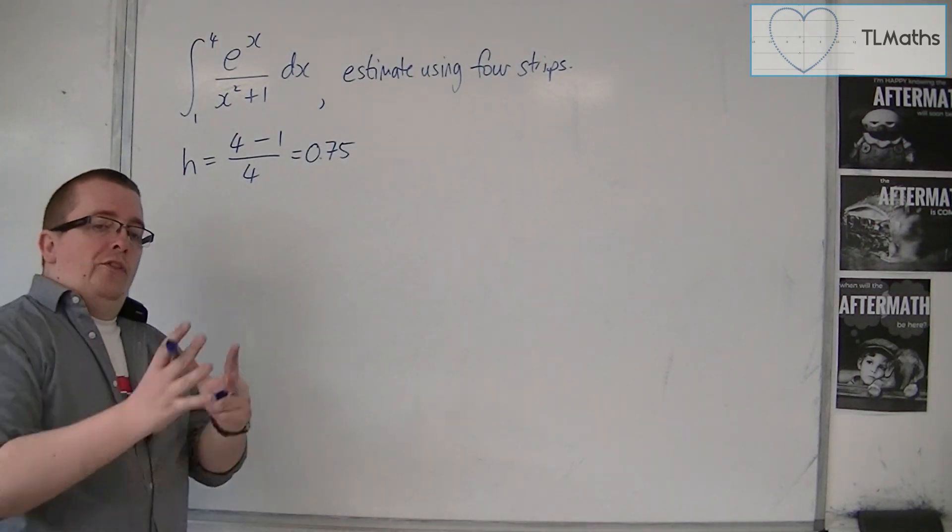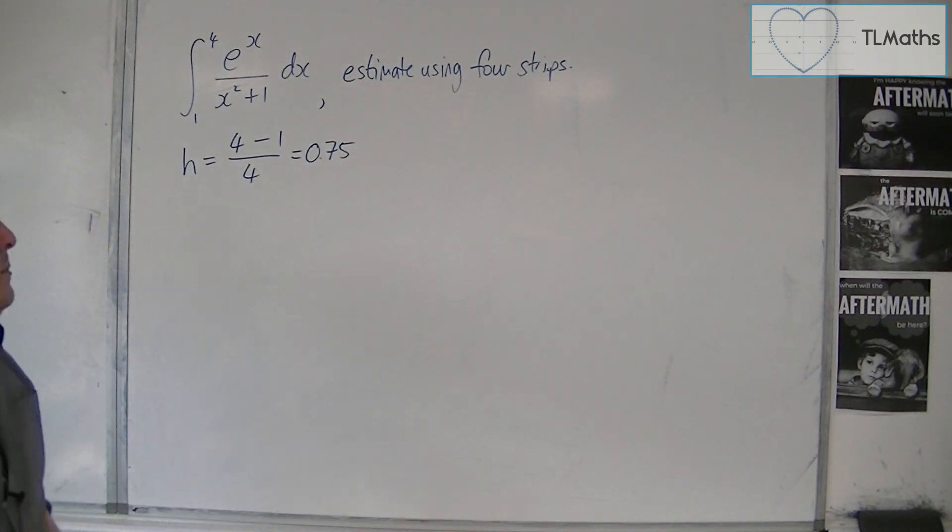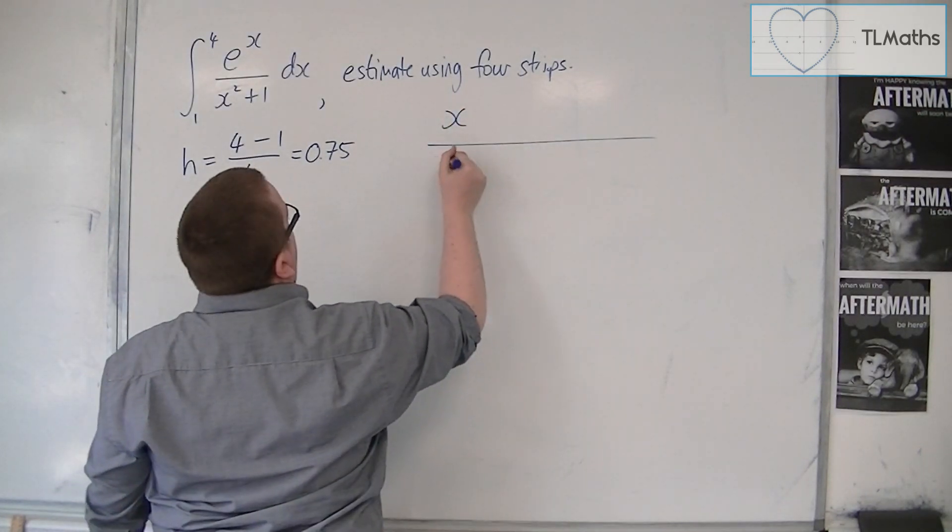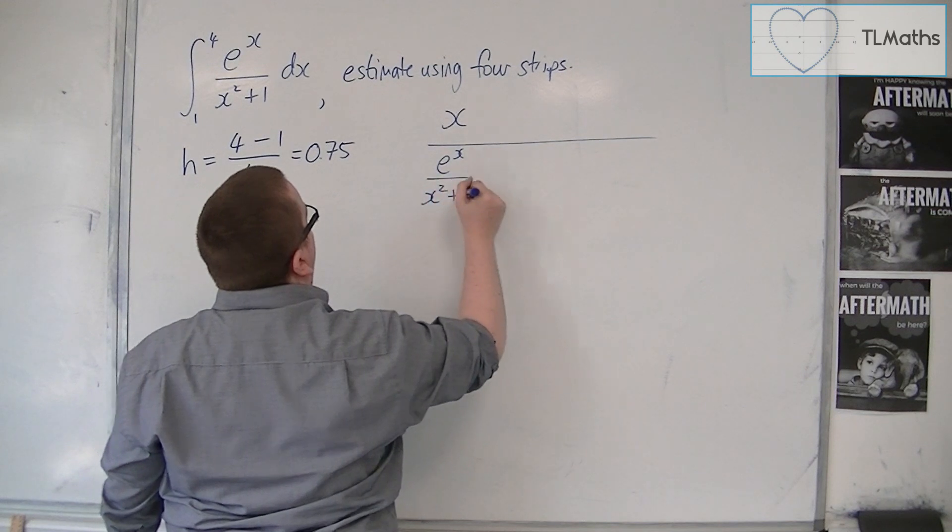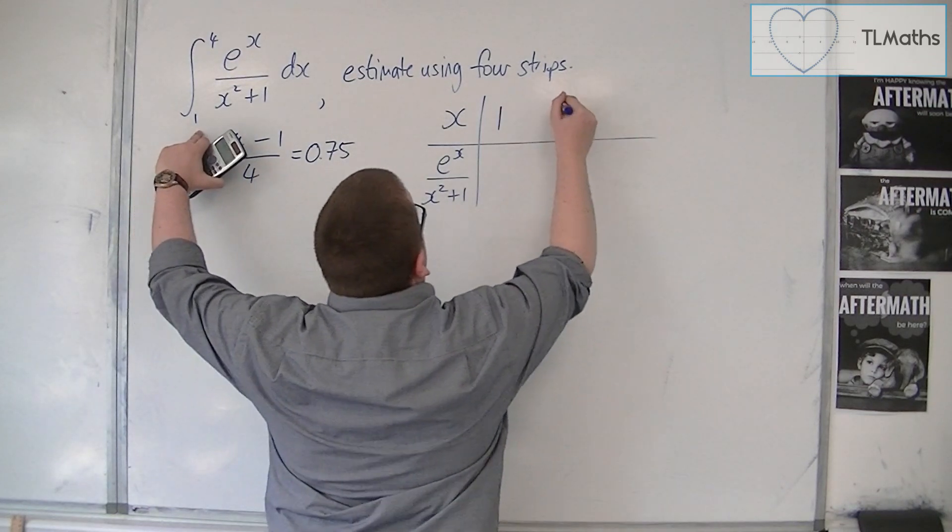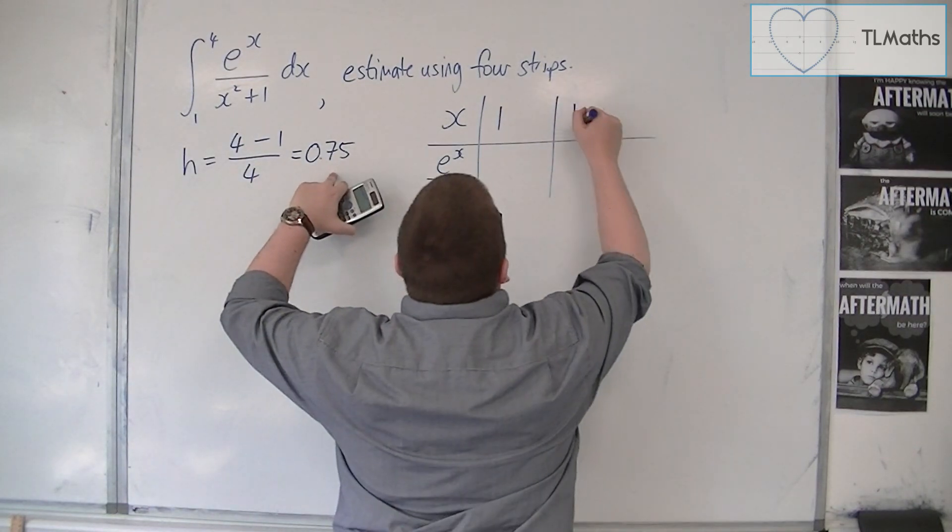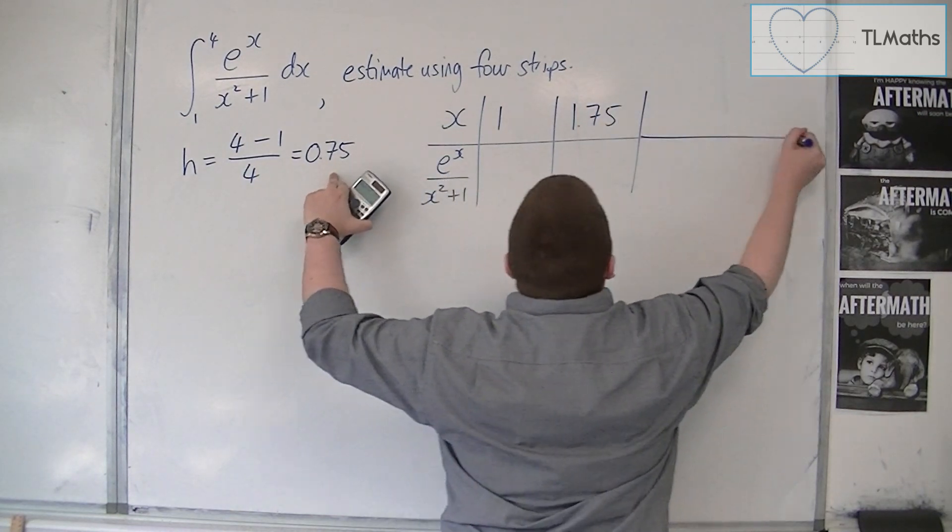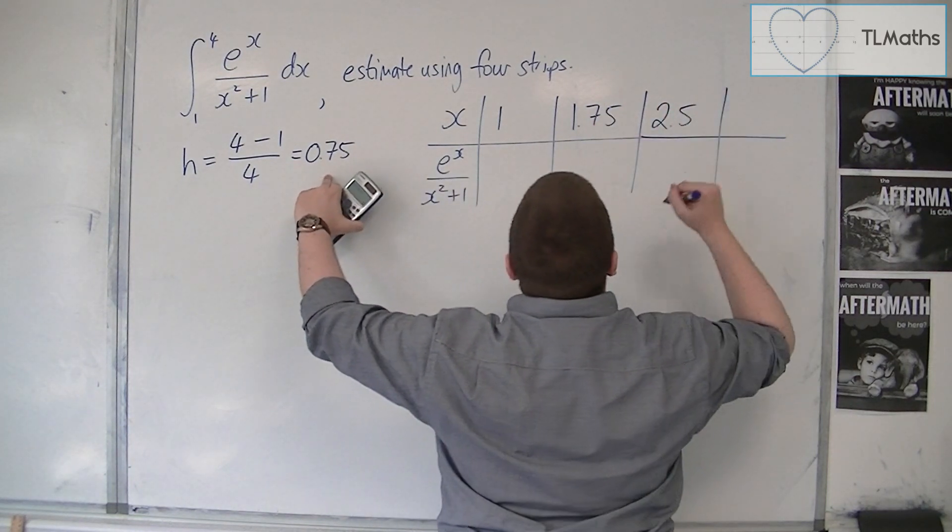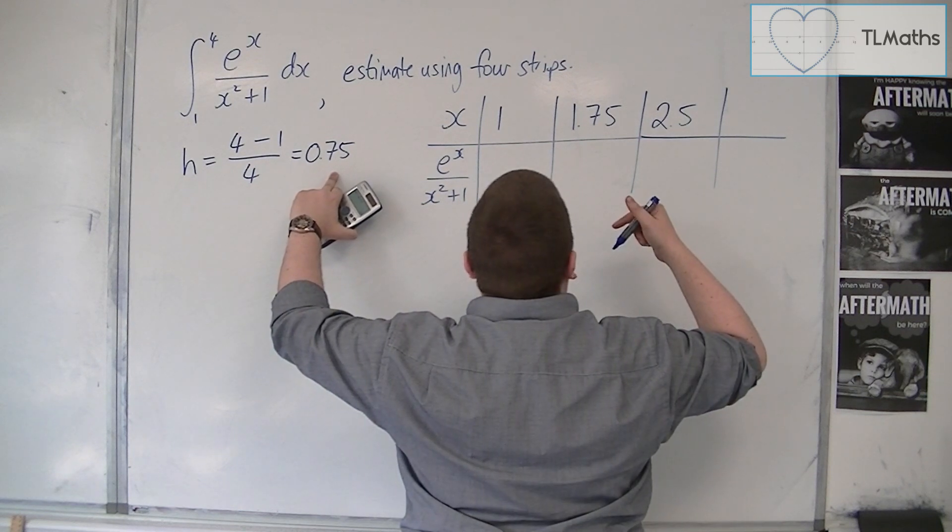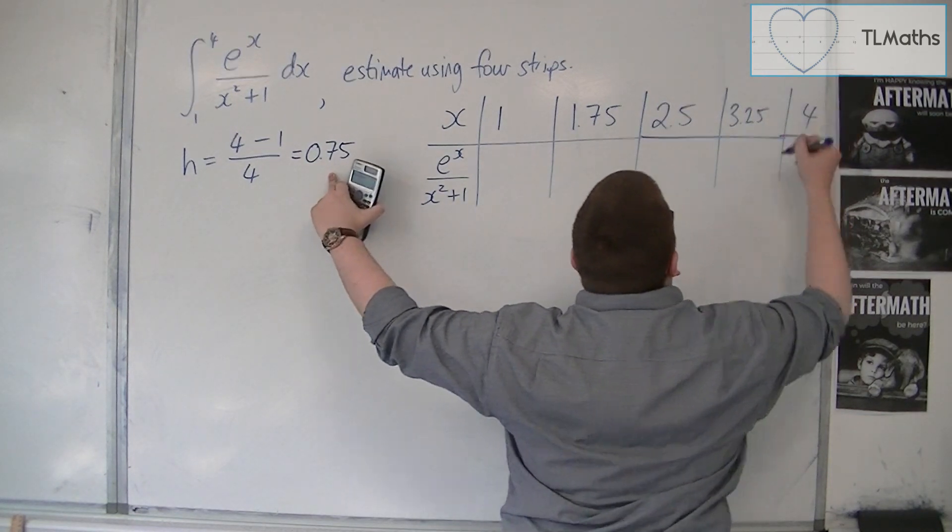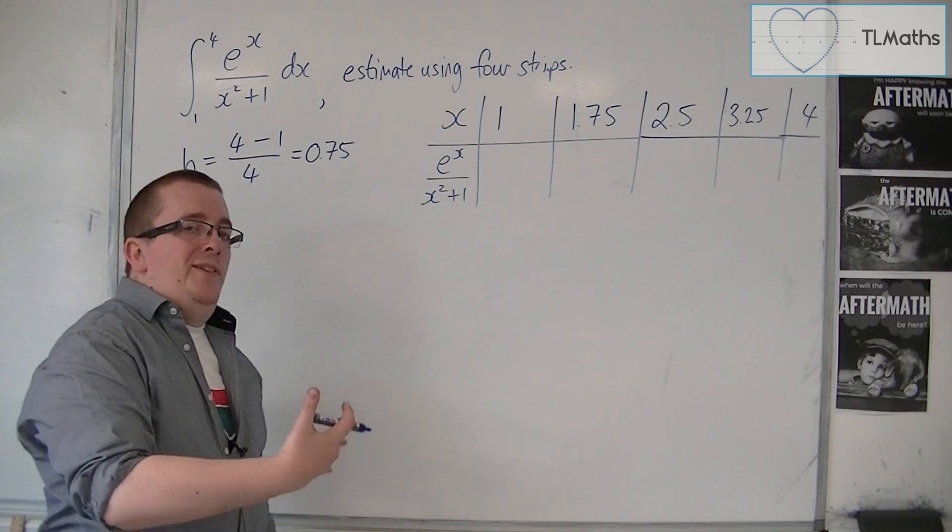So that tells you what to go up in each time in the table. So we're going to build ourselves a little table. We're going to have x's, and we're going to have e to the x over x squared plus 1. So the x's start at 1, the next term is 1.75, the next term is 0.75 added on to that, so 2.5, and then 2.5 plus 0.75, so 3.25, and the final one will be 4. So it's going up in 0.75 intervals.